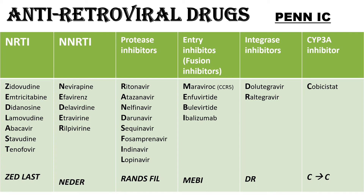Quick review of the classification: NRTIs — Zidovudine, Emtricitabine, Didanosine, Lamivudine, Abacavir, Stavudine, Tenofovir. NNRTIs — Nevirapine, Efavirenz, Delavirdine, Etravirine, Rilpivirine. Protease Inhibitors — Ritonavir, Atazanavir, Nelfinavir, Darunavir, Saquinavir, Fosamprenavir, Indinavir, Lopinavir. Entry/Fusion Inhibitors — Maraviroc, Enfuvirtide, Bulevirtide, Ibalizumab. Integrase Inhibitors — Dolutegravir, Raltegravir. CYP3A Inhibitor — Cobicistat.